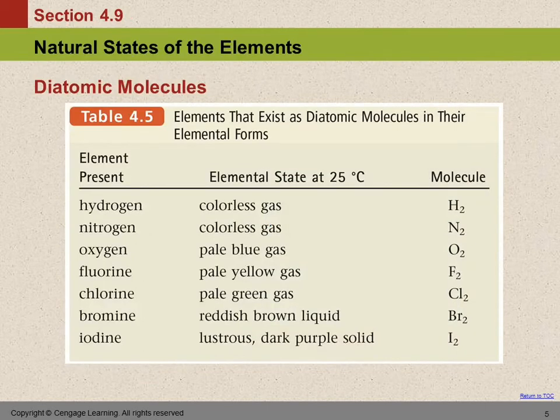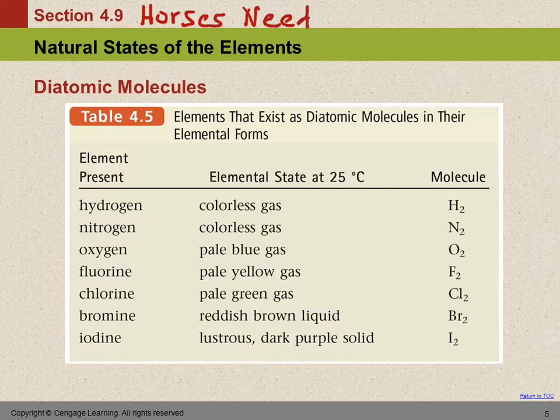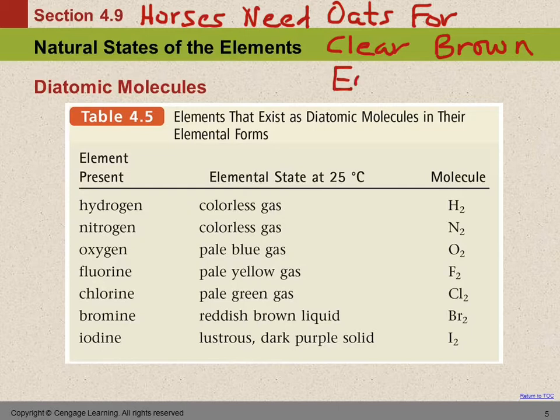Okay, so we have a way, we have a silly sentence to help us remember that. It's called a mnemonic because the first letters of the words stand for something. So we say horses need oats for clear brown eyes.